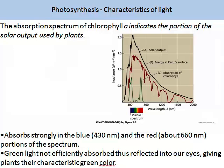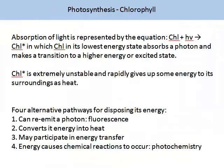In the figure on the slide you will see the solar output from the sun, the amount of energy in red that hits the Earth's surface, and then finally in green the amount of absorption by chlorophyll. Chlorophyll absorbs strongly in the blue and the red regions. Green light is not efficiently absorbed and thus reflected into our eyes, giving plants their characteristic green colour. Chlorophyll absorbs light and then goes into a higher energy state. When in this higher energy, or excited, state it is extremely unstable, and it is this characteristic which allows the chlorophyll to give up the energy so readily to its surroundings as heat.